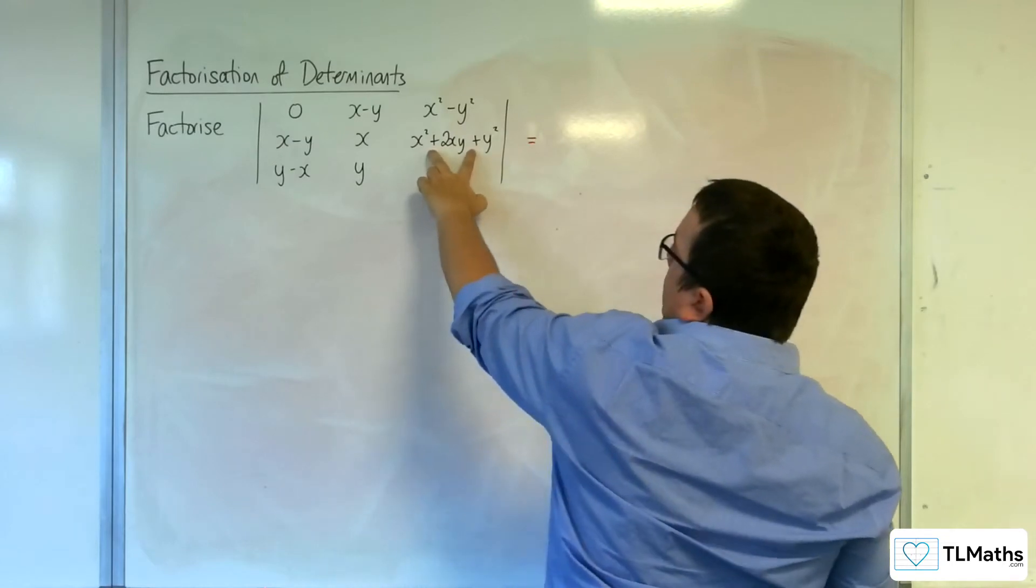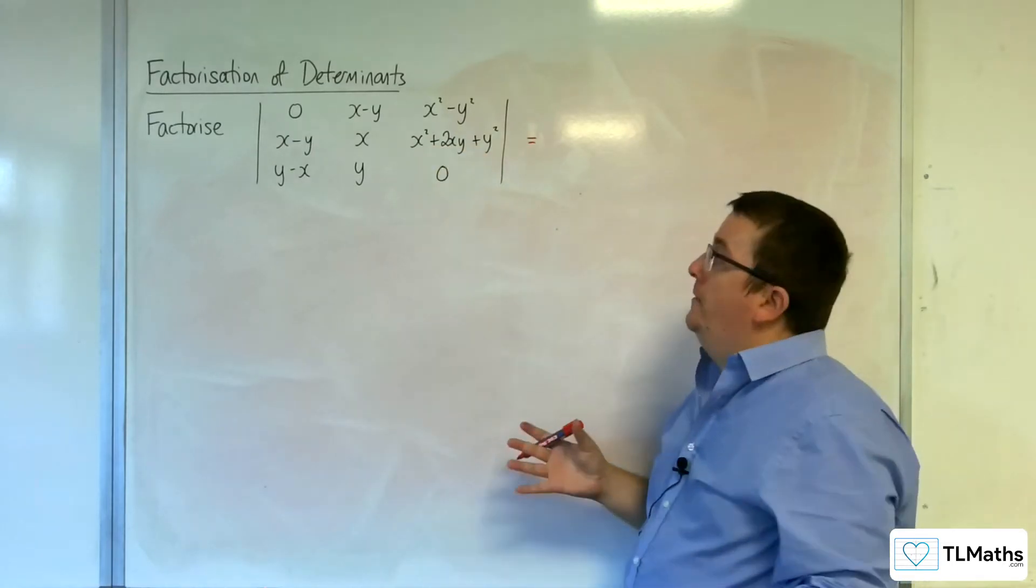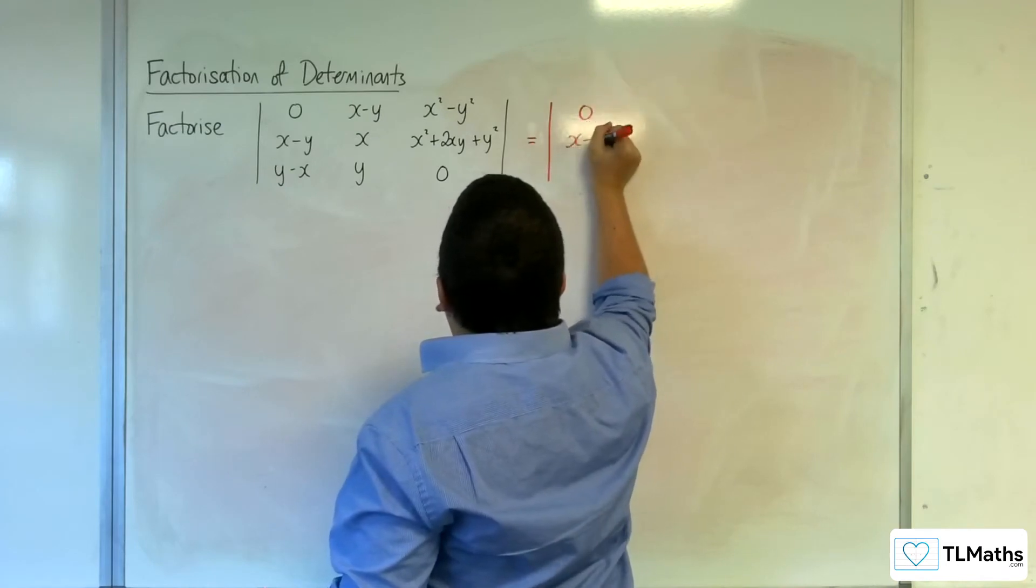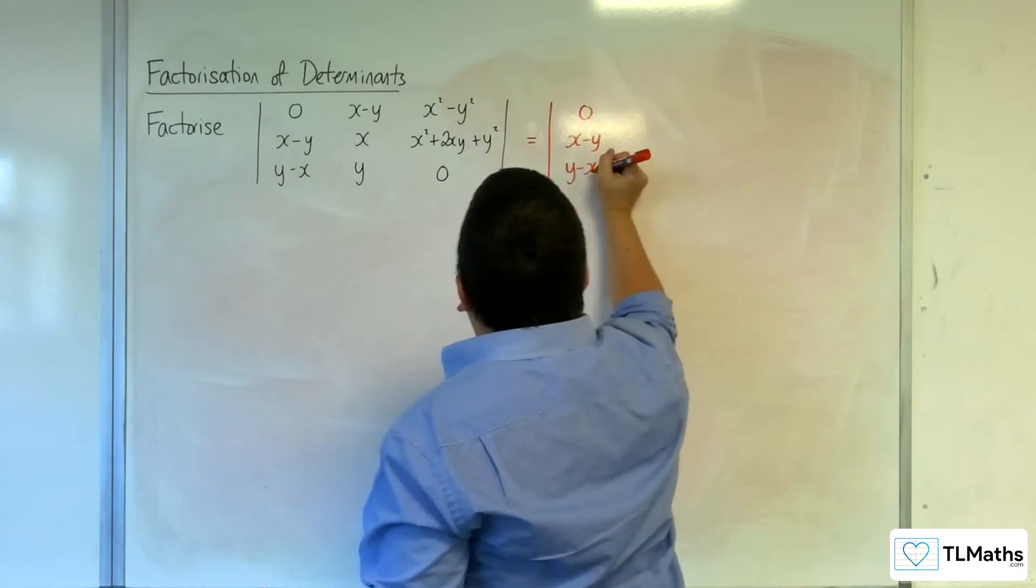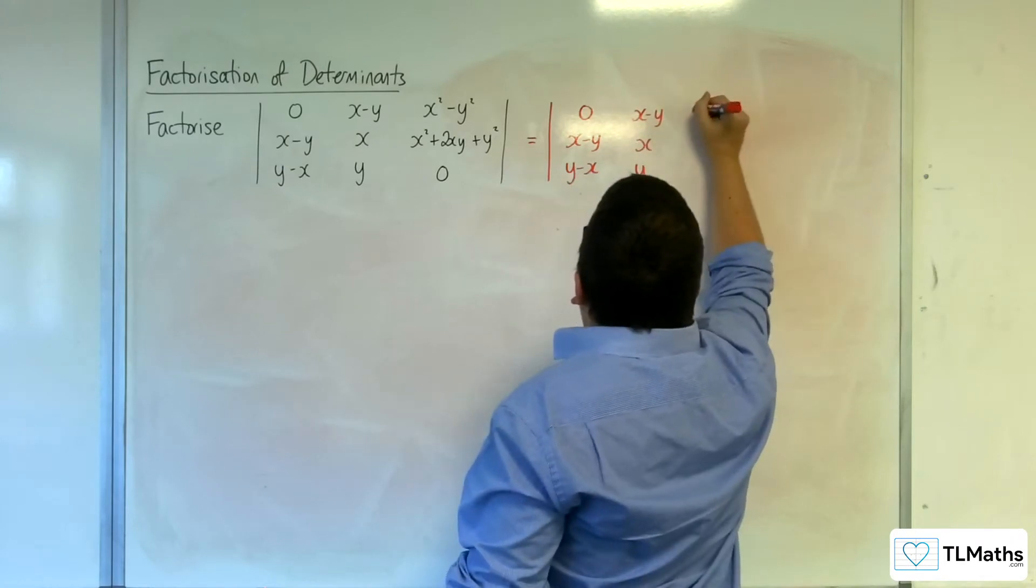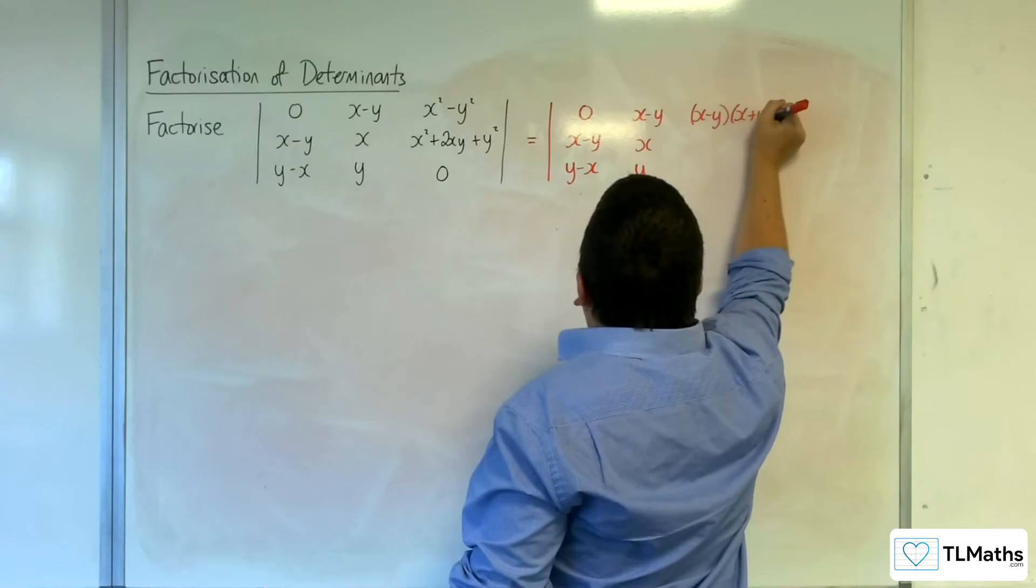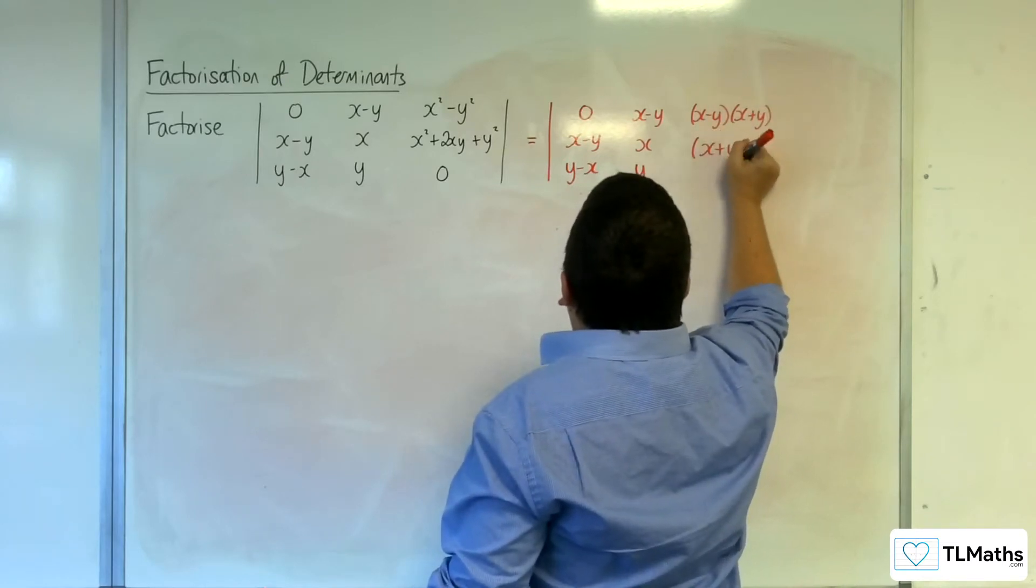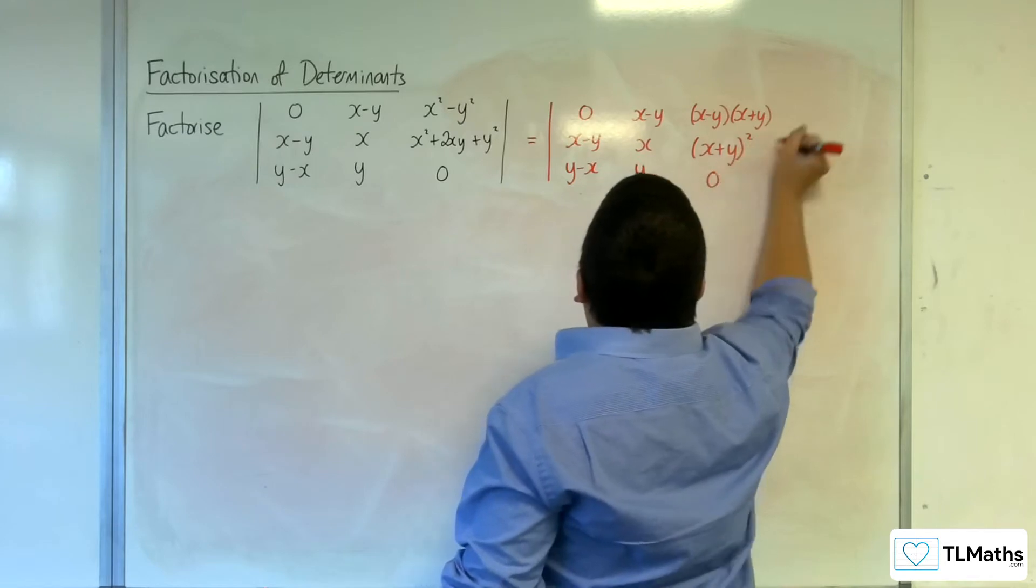And this can be factorised as well, because that's just (x+y) squared. So I can write this as: 0, x take away y, y take away x, x take away y, x, y, then x take away y, x plus y (difference of two squares), then factorising that to get (x+y) squared, and we'll have 0.